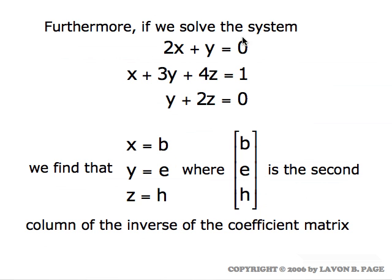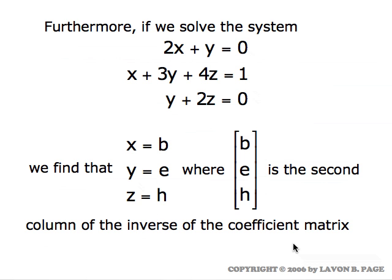If you look at the second system, where instead of one, zero, zero on the right we have zero, one, zero, what you find is that the solution for the system is the numbers in the second column of the inverse matrix. And if you do it for the third system, where the one is in the last position, the solution for x, y, and z is the numbers in the third column of the inverse matrix.